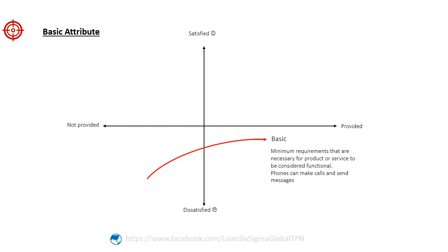Basic attributes are fundamental features that customers expect as a minimum requirement. They are necessary for a product or service to be considered functional. If these attributes are not present, it leads to extreme dissatisfaction. However, their presence alone doesn't necessarily create satisfaction, as customers take them for granted. For example, a basic attribute for a smartphone would be the ability to make phone calls and send text messages. These functionalities are essential and expected by customers, and if the smartphone lacks these basic features, it would result in extreme dissatisfaction.